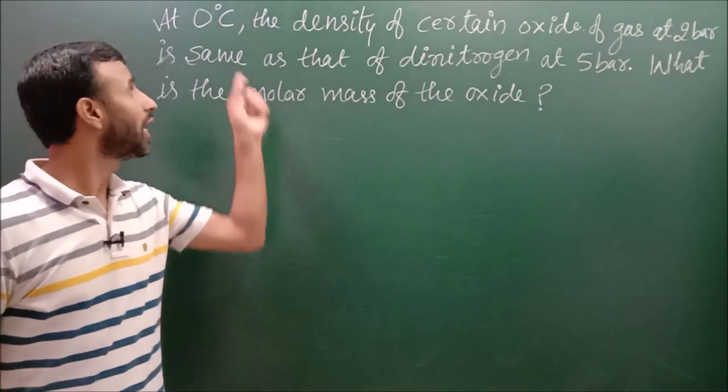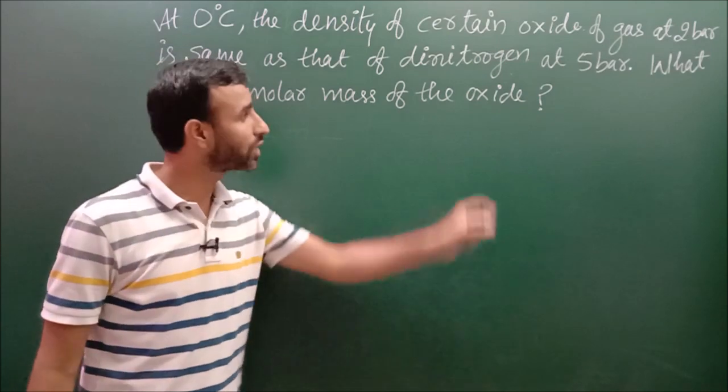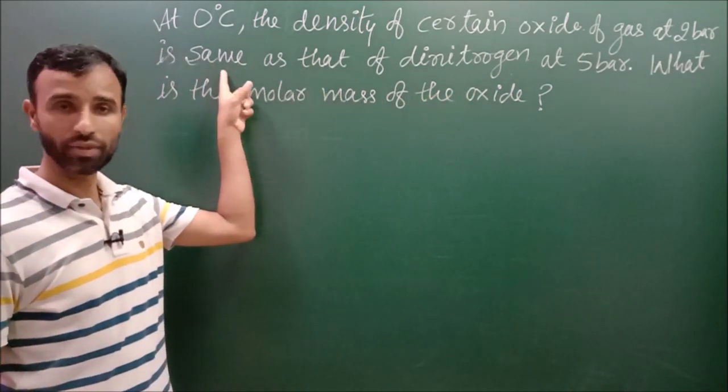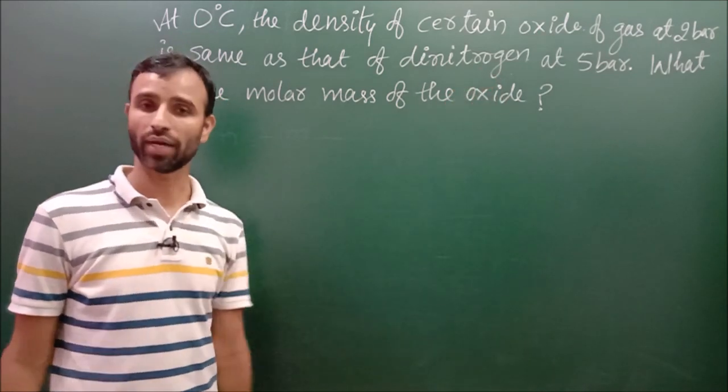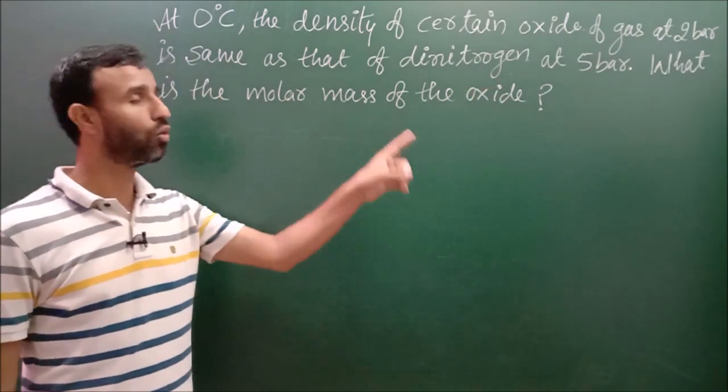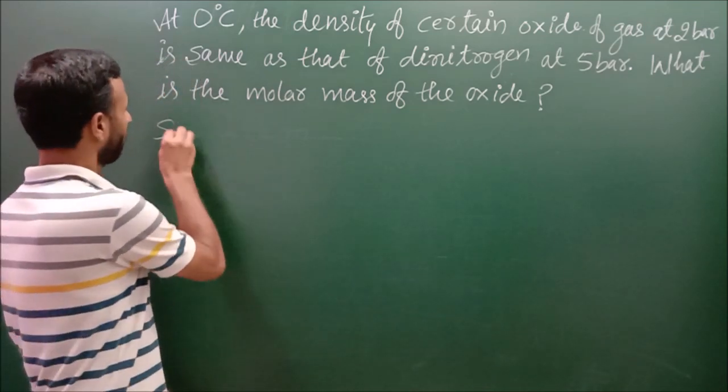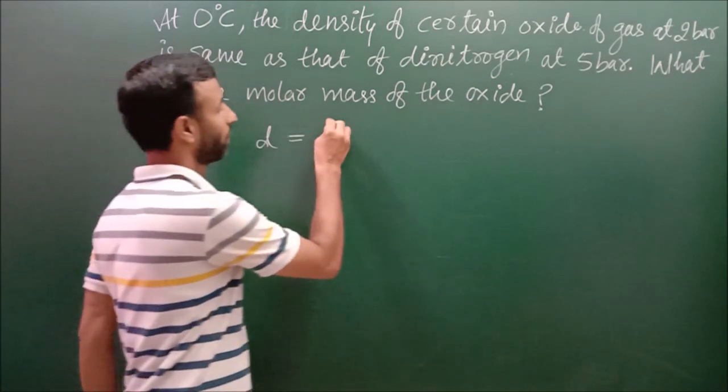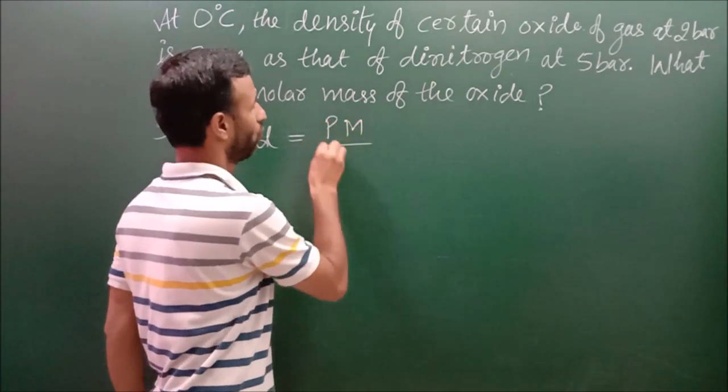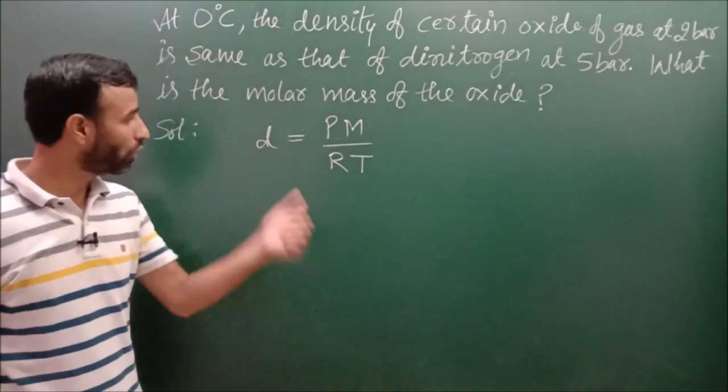Okay, so the question is: at 0 degree Celsius the density of certain oxide of a gas at 2 bar is same as that of dinitrogen at 5 bar. So what is the molar mass of the oxide?